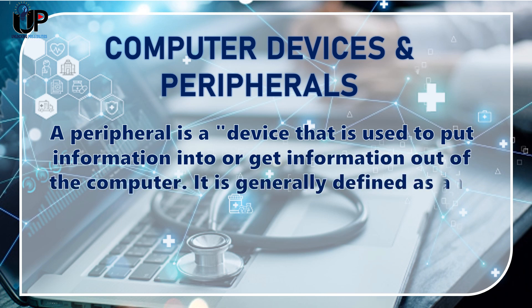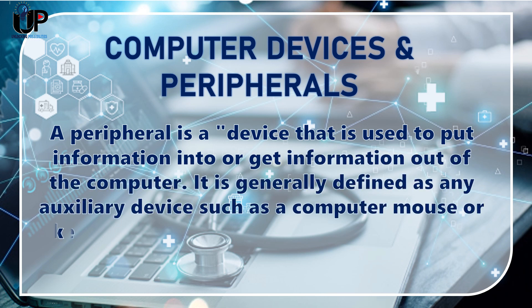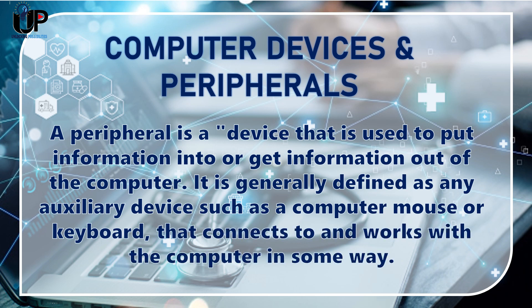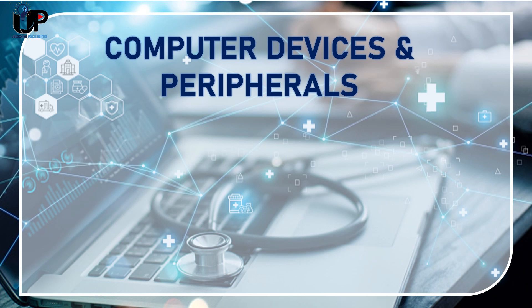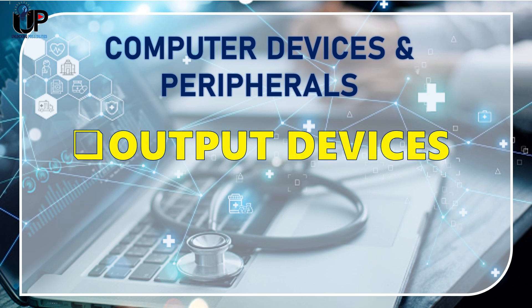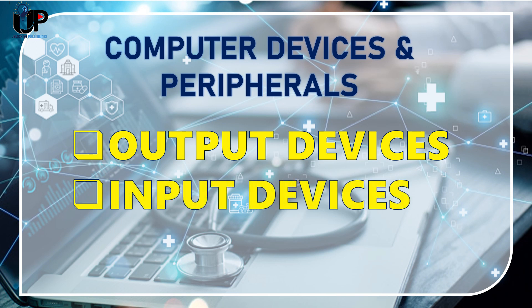A peripheral is generally defined as any auxiliary device, such as a computer mouse or keyboard, that connects to and works with the computer in some way. There are three different types of computer peripherals: the output devices, the input devices, and the storage devices.